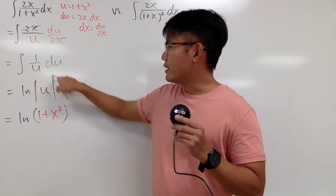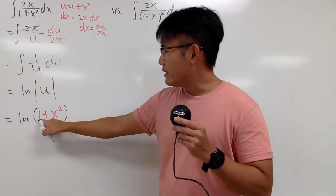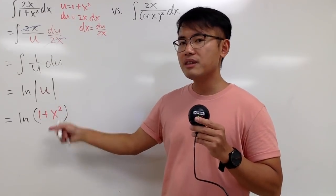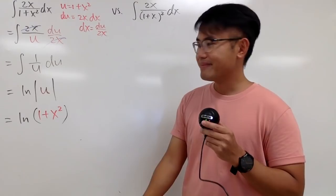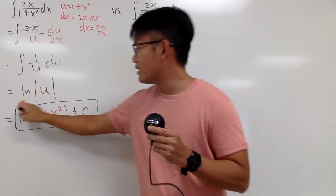But earlier, when I go from this to this, let me still just maintain the absolute value. Only at the end, when I see that this is always positive, I will change that to a parenthesis. And we're done. So I'll put down plus c, box the answer, like this.